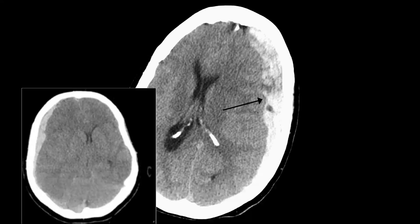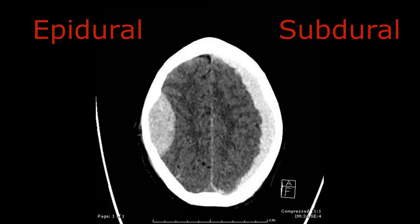For subdural hematoma, it is mainly caused by accidents or falls and is due to veins of the brain that are torn. In subdural, the appearance is more concave and it is not trying to reach the midline. Here you can distinguish between epidural and subdural.